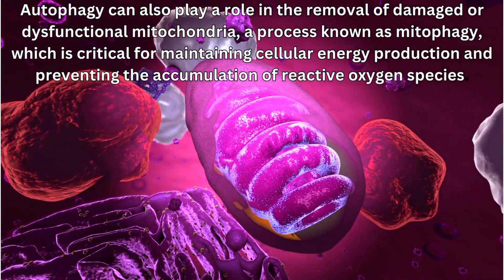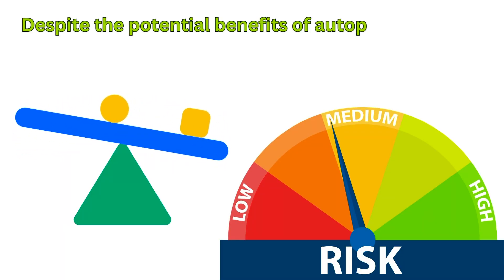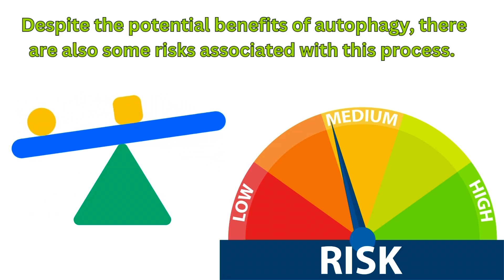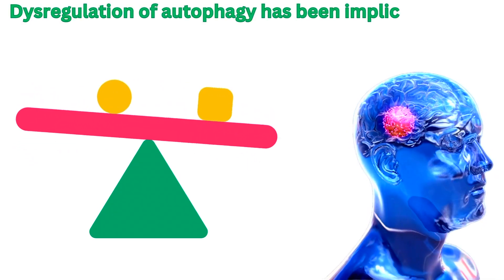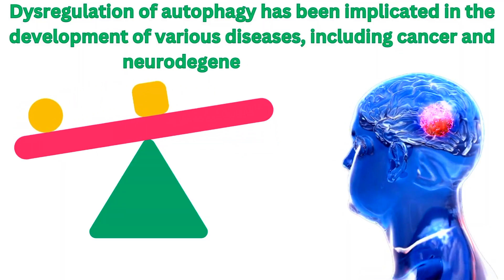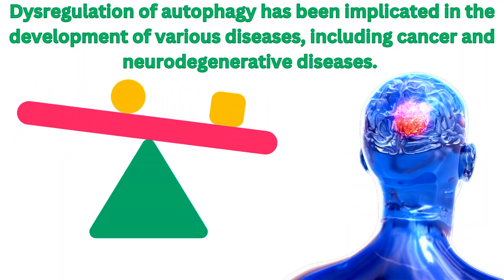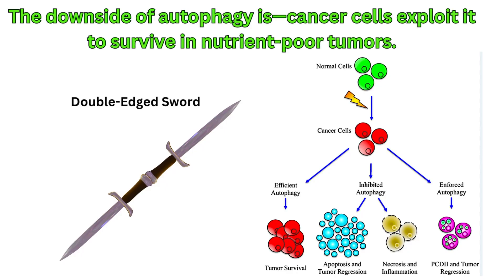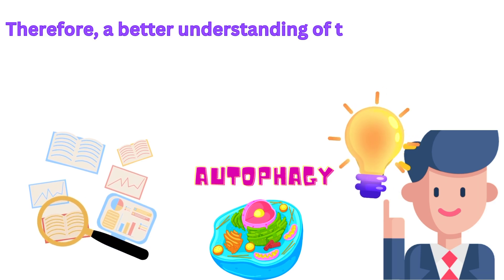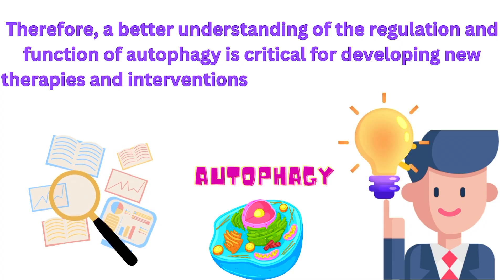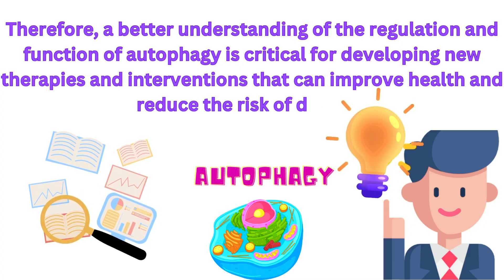Despite the potential benefits of autophagy, there are also some risks associated with this process. Dysregulation of autophagy has been implicated in the development of various diseases, including cancer and neurodegenerative diseases. The downside of autophagy is that cancer cells exploit it to survive in nutrient-poor tumors. Therefore, a better understanding of the regulation and function of autophagy is critical for developing new therapies and interventions that can improve health and reduce the risk of disease.